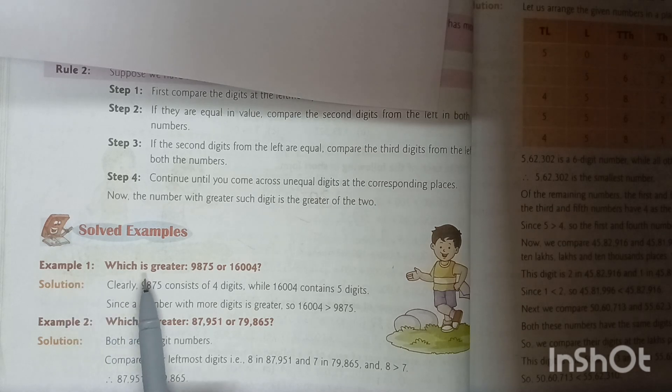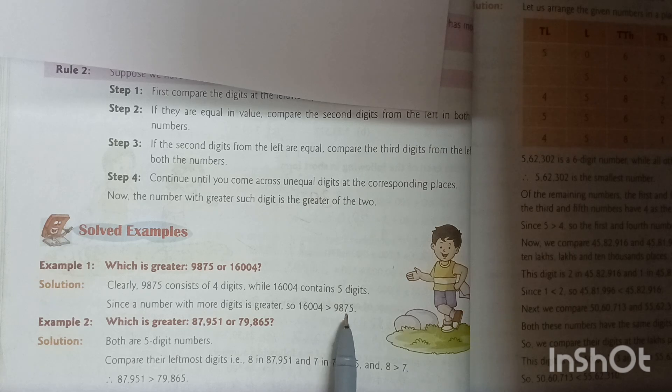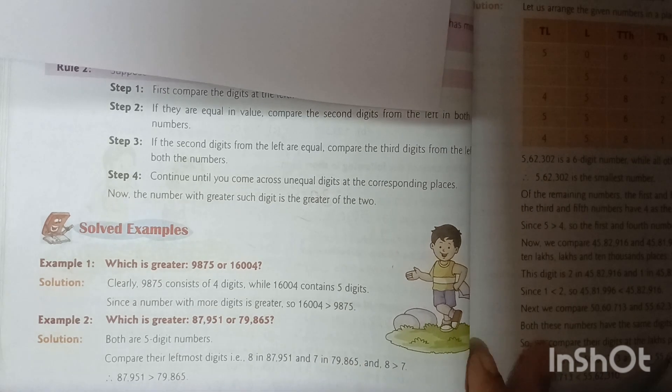Example 1: Which is greater, 9,875 or 16,004? Solution: Clearly, 9,875 consists of 4 digits while 16,004 contains 5 digits. Since a number with more digits is greater, 16,004 is greater than 9,875.